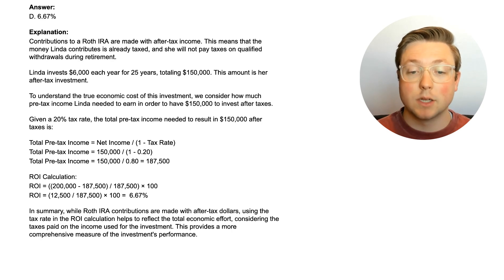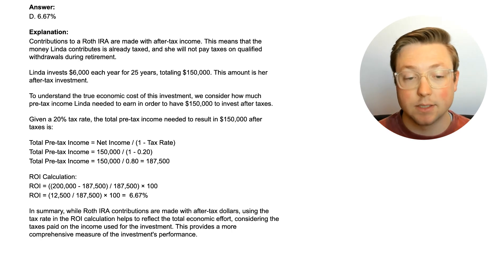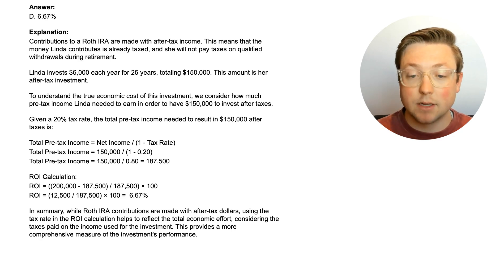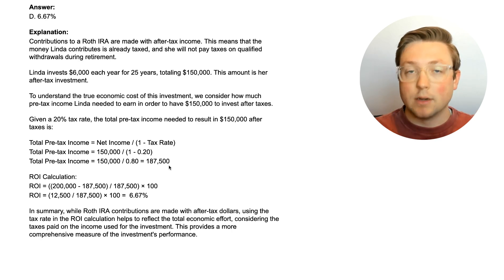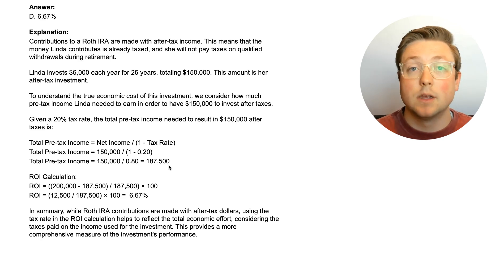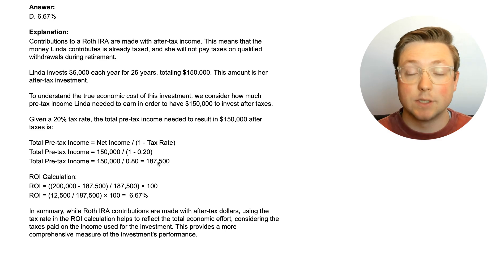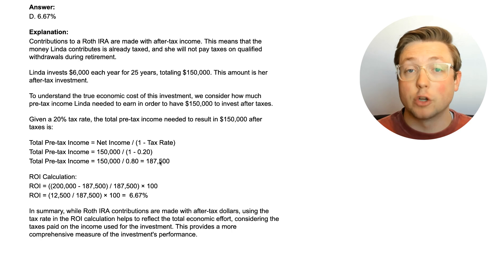To understand the true economic cost of this investment, we consider how much pre-tax income Linda needed to earn in order to have $150,000 to invest after taxes. Given a 20% tax rate, the total pre-tax income needed is calculated by taking $150,000 and dividing it by one minus the tax rate — that's dividing by 0.8 — giving you $187,500. For Roth IRAs, you have to invest after-tax income, but to get to that point you have to pay taxes first. That is a built-in expense or cost of this investment. So in all reality, $187,500 is the actual real investment when you think about the total economic cost of contributing to this Roth IRA.